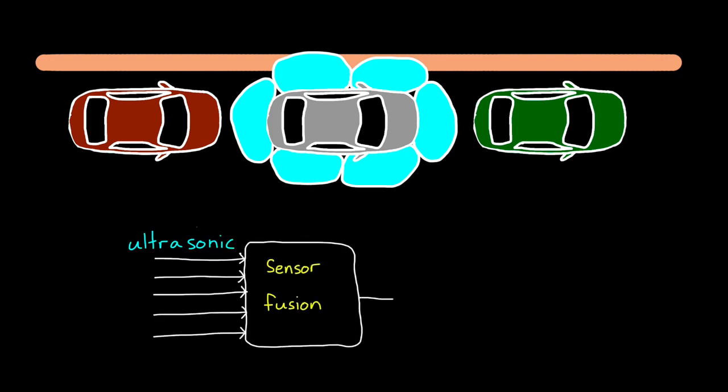Now more than likely, these measurements won't be averaged or combined mathematically in any way, since it's usually helpful to know which sensor is registering an object, so that you have an idea of where that object is relative to the car. But the algorithm that pulls all of these sensors together into one coherent system is still a form of sensor fusion.